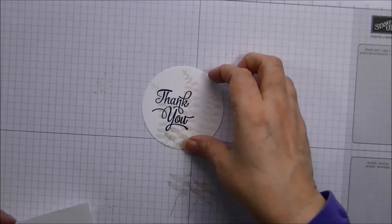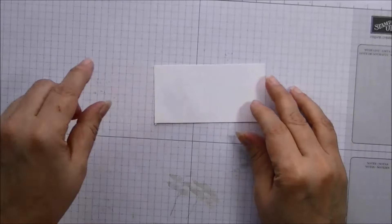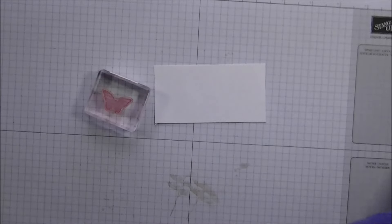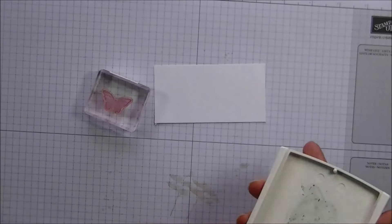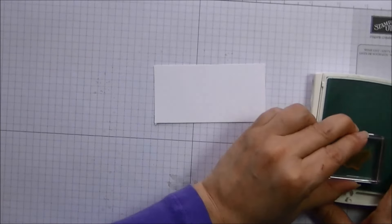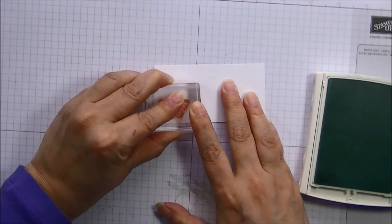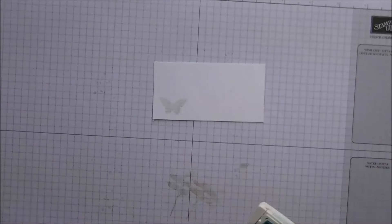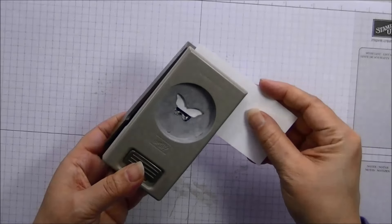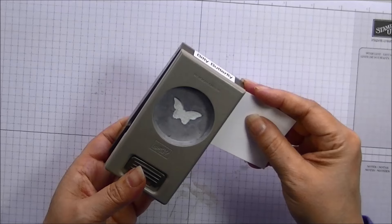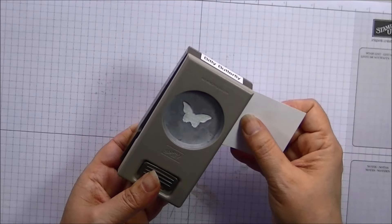We are going to go ahead and find, I am going to set this aside. We are done with this. Now I have my scrap piece of the Whisper White and then I have my little butterfly that comes from the Butterfly Basics. And we are going to stamp that in the Pool Party. Now we are going to stamp this out.